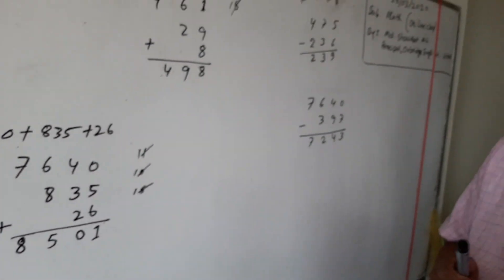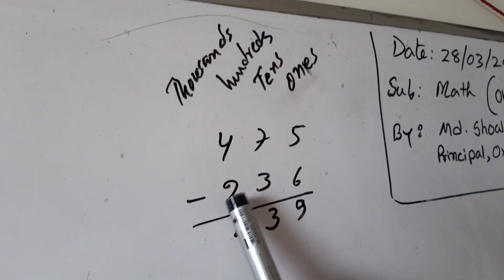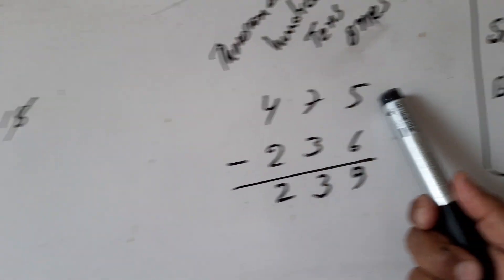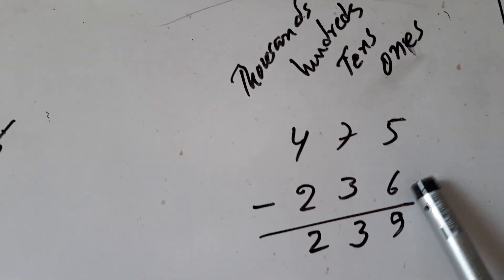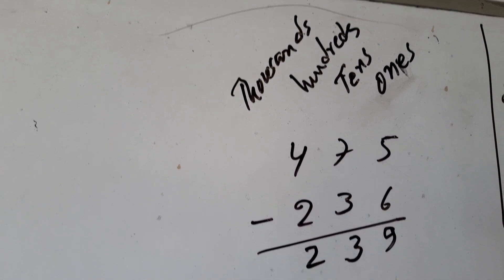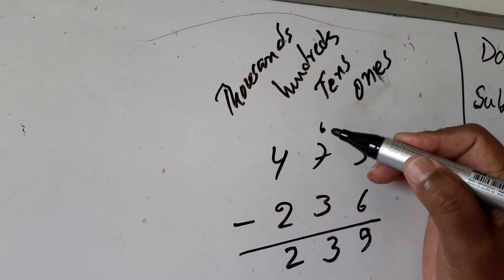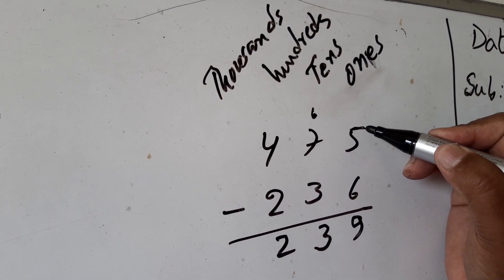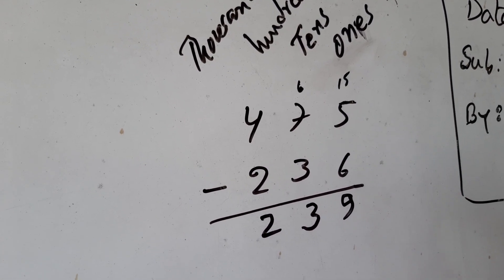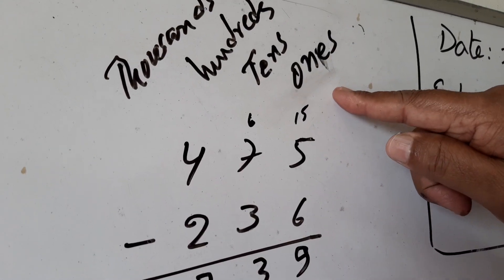In the case of subtraction: 7,475 minus 236. Since 6 is greater than 5, we cannot subtract 6 from 5, so we have to borrow 1 from 7. If we take one loan, here will be 6 — write it with pencil — and here will be 15.